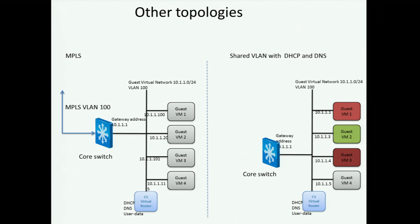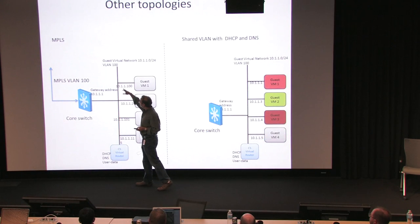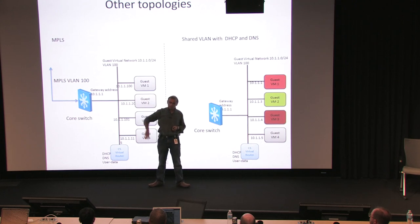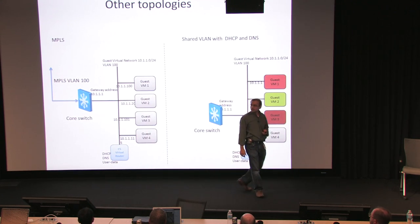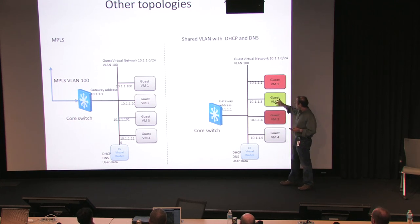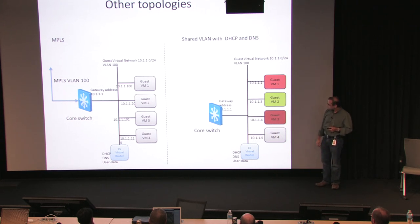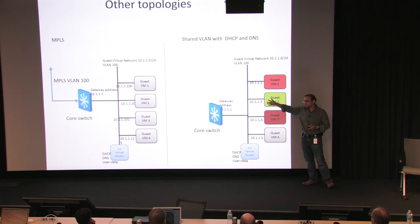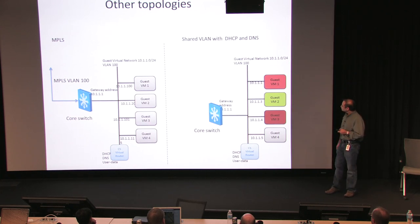This is the MPLS topology. You have a service provider cloud bringing in an MPLS VLAN 100 from your data center or premises, stretching that into your VLAN 100 here so these VMs appear to be local to your premises. Another topology: the administrator can create a shared VLAN and allow different tenants to start VMs on it. That's also popular in the enterprise — you can say this is where the web VMs are, and if you ever want to start a web VM, you have to start on this VLAN.